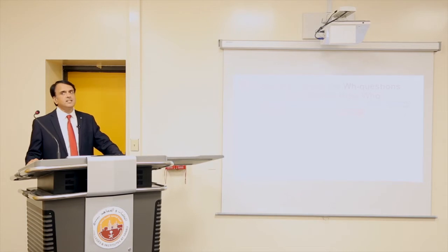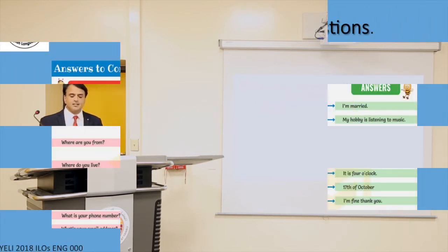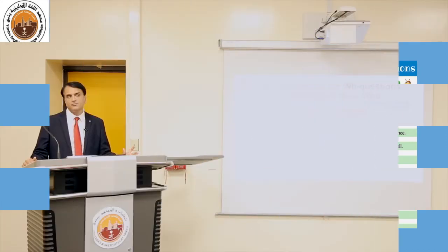Our next objective for these two weeks is that the students should be able to ask and answer WH questions, for example: what, where, how, etc. The students should be able to ask questions with WH words and answer them properly. For example: where do you live? Where are you from? The answer could be: I live in Paris and I am from France.